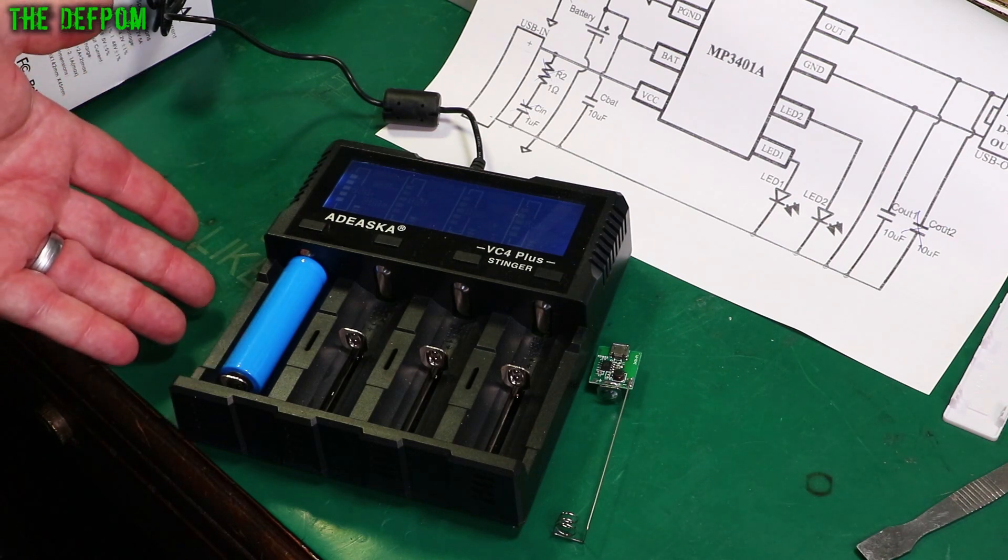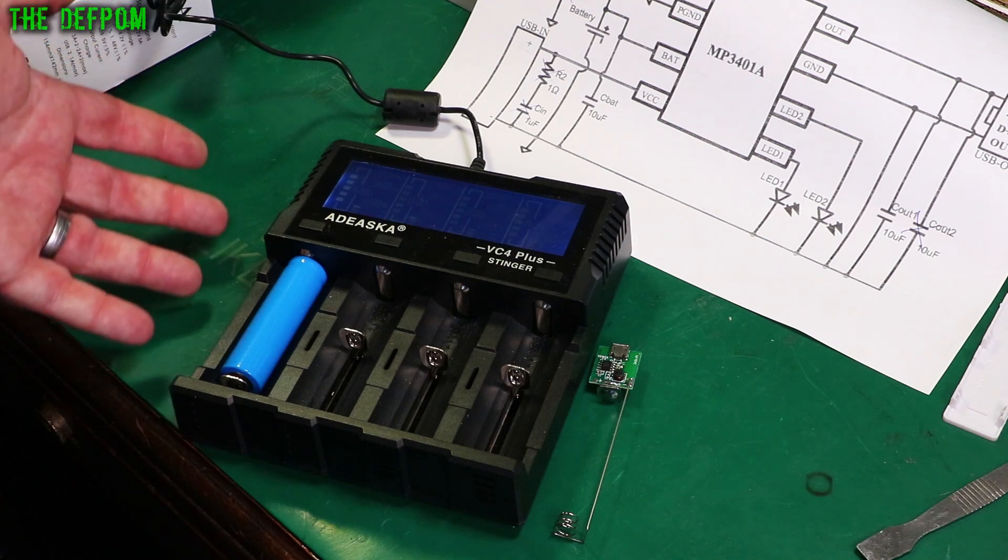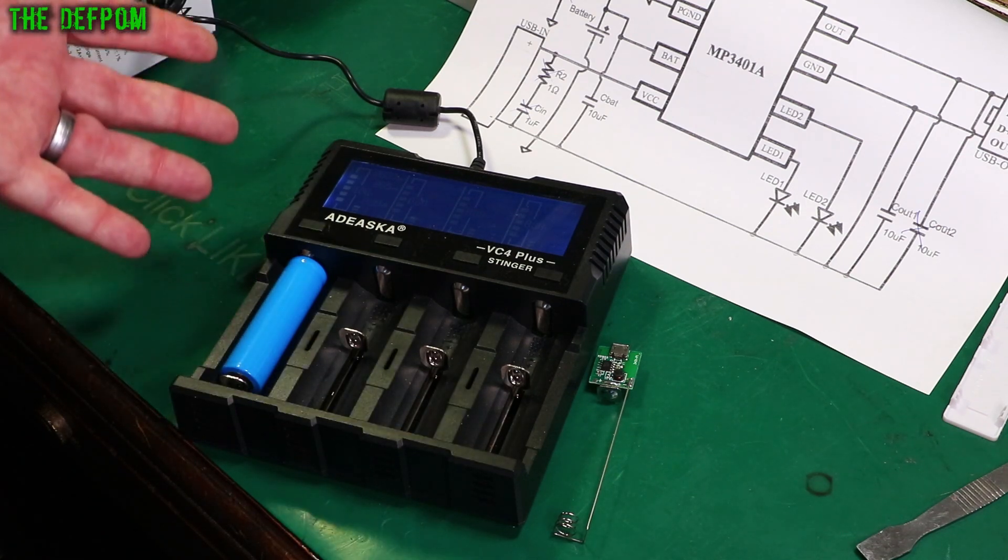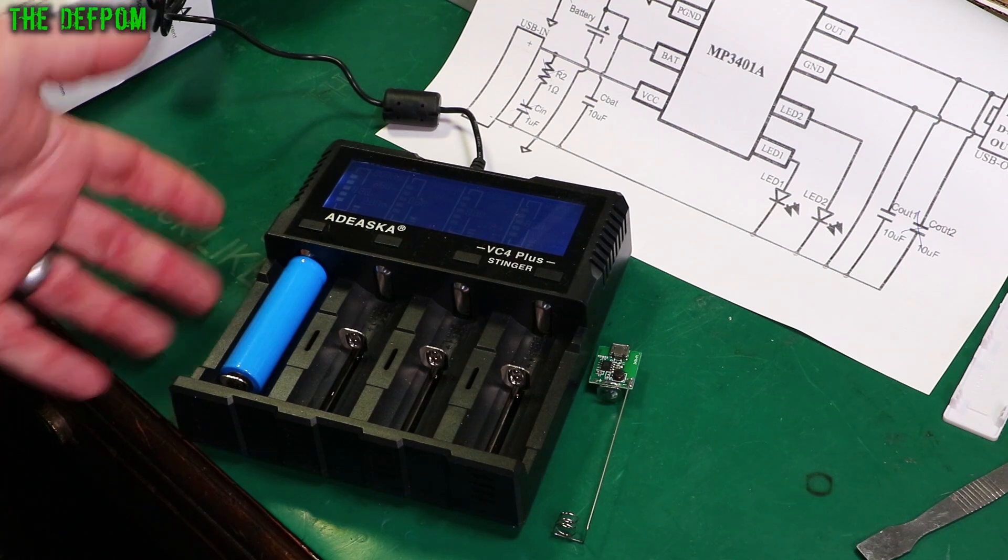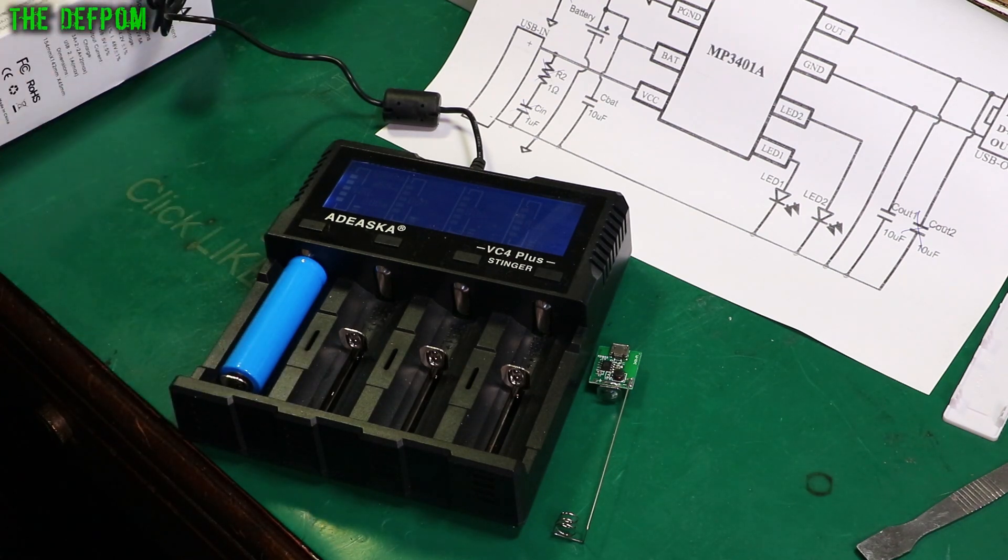But then these little power banks, they weren't expensive either. I think they were about 5 dollars each or something when my wife bought them, because she bought them. I said to her I don't see how they can do them for that, because that's like the cost of a cell. Anyway, that's how they can do it. They give you a really rubbish cell, which is probably half full of sand or something, I don't know.